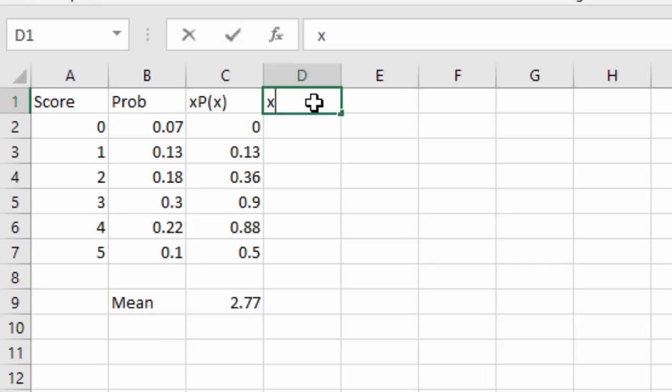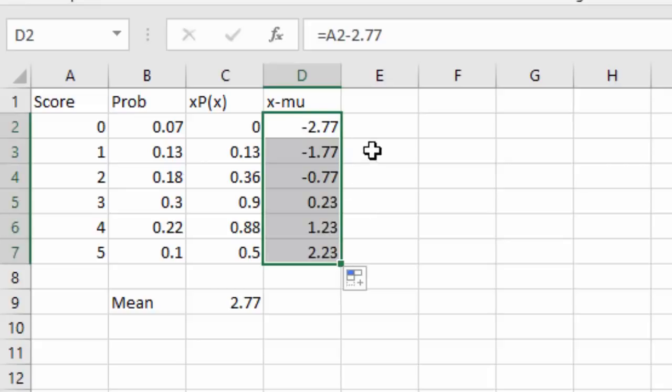Now let's go after the standard deviation, which we find by taking x minus the μ, or x minus the mean. We'll hit equals and select the score, and since we want to keep the mean the same, we don't want it to scroll down. Let's just type it in, 2.77, enter. Now when I click that dot and drag it down, I get all of those values.